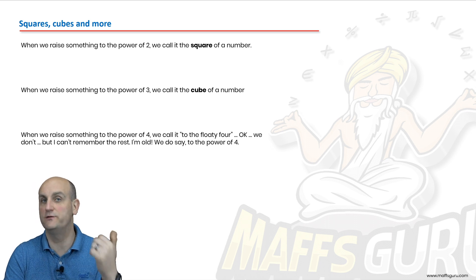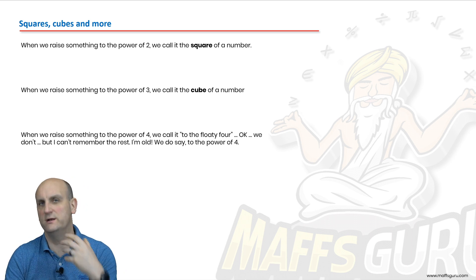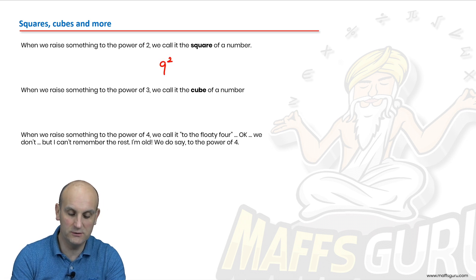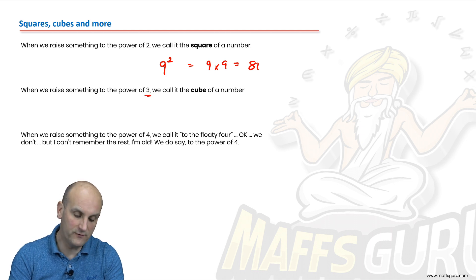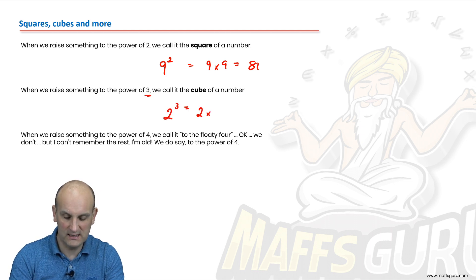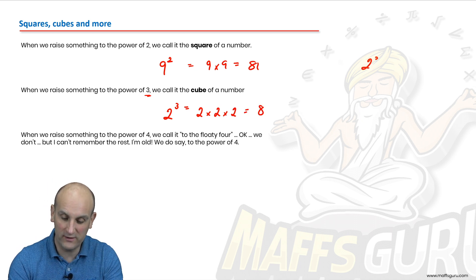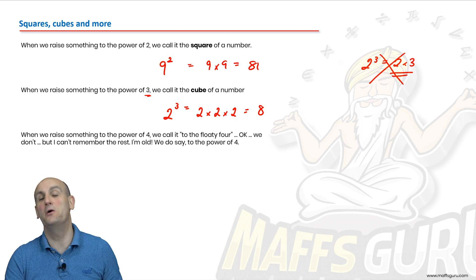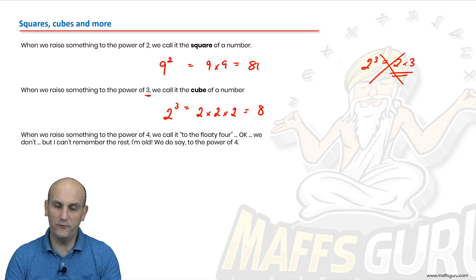There are more than floaty twos — I've shown you floaty three and floaty five. These all have names. The ones we use most are the squares of numbers: nine with a floaty two means nine times nine, which is 81. The cube of a number uses a floaty three: two to the power of three is two times two times two, which is eight. Sadly, a lot of people get tricked thinking two to the floaty three is the same as two times three — it is not. Please don't make that mistake.